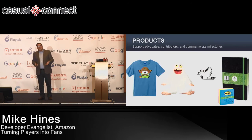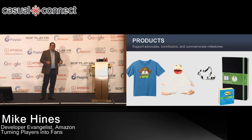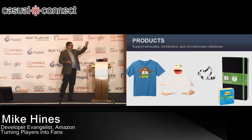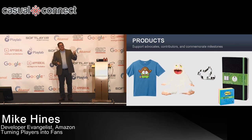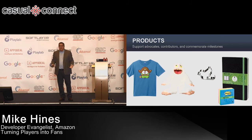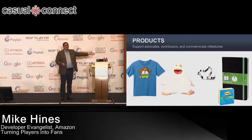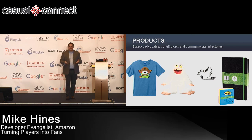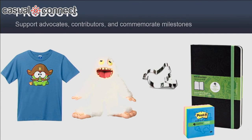The real opportunity is making money on your intellectual property because you've got super fans. We have Cut the Rope, My Singing Monsters. There's even a Twitter cookie cutter on Amazon — people buy the thing, they make Twitter cookies. And Evernote, everyone knows it's a great digital note-taking tool, but not all notes are taken digitally. So Evernote now has a branded line of notebooks and sticky notes with 3M.